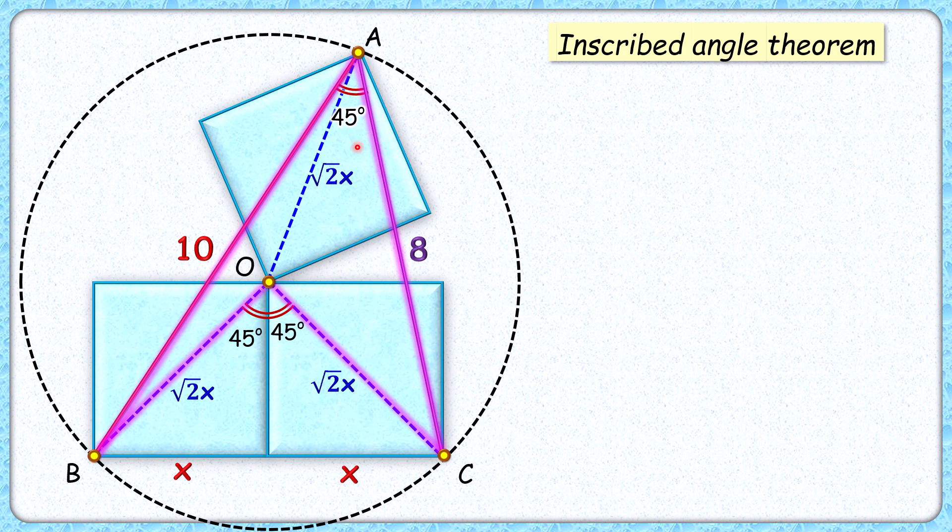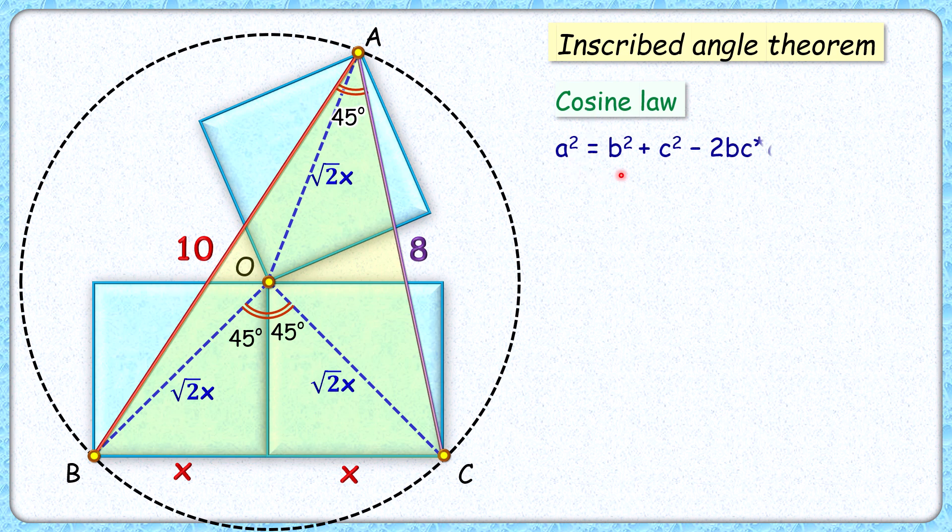Now for the second part, that is area of this square, let's consider this triangle ABC and apply cosine law in it. Cosine law states that a² = b² + c² - 2bc cos θ, where a, b, c are the side lengths of the triangle, θ is angle between side b and c. So here putting the values: a is 2x.